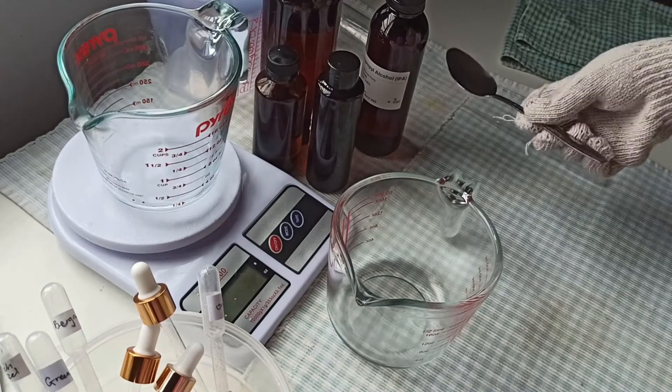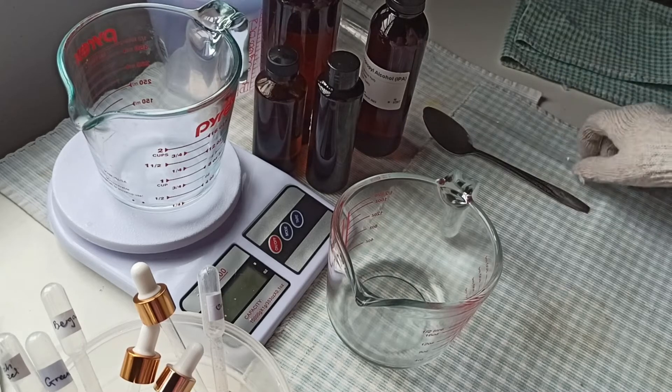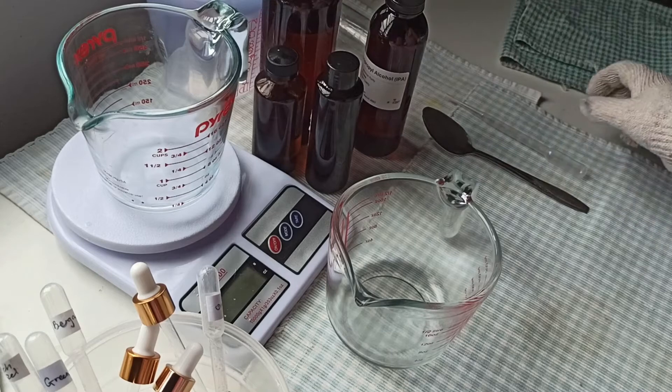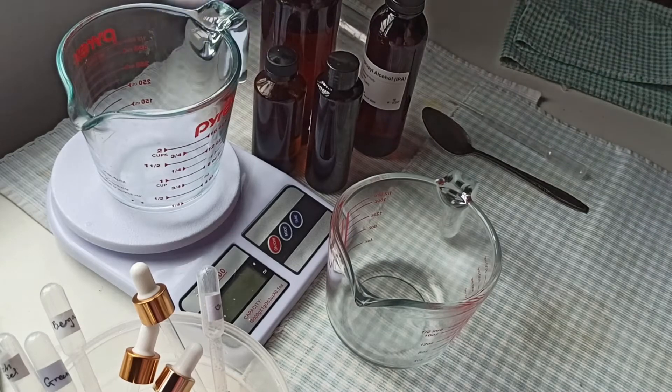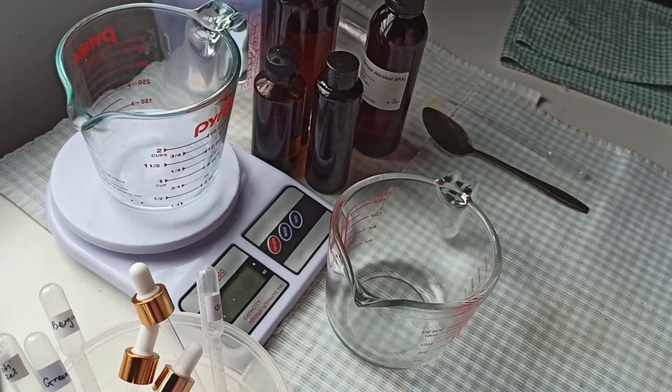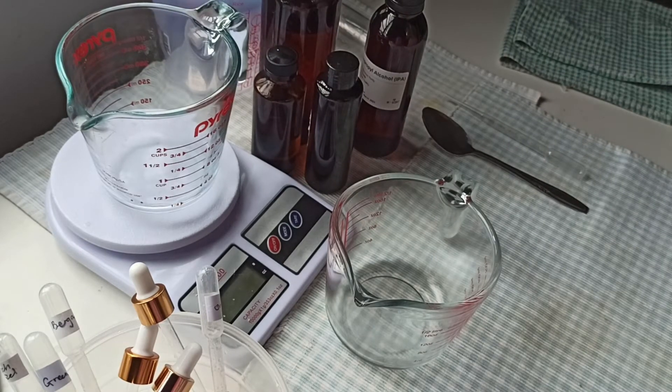I have my spoon that you have to mix the hand sanitizer with. And I also have a dropper to measure out the hydrogen peroxide. I also have another jug just in case I need to chuck something into because I know how clumsy I can get.